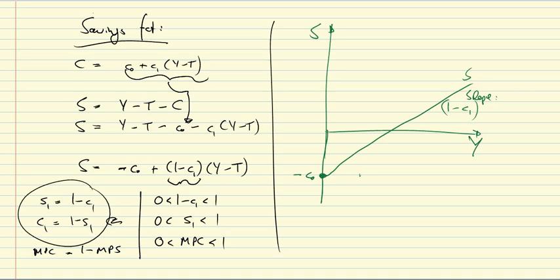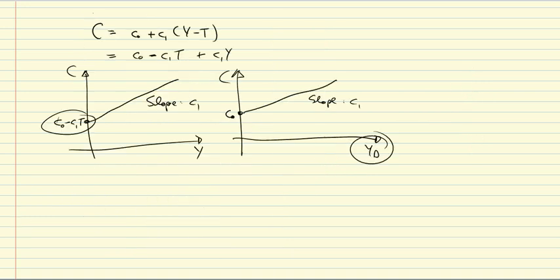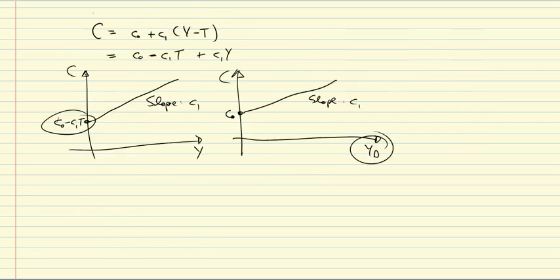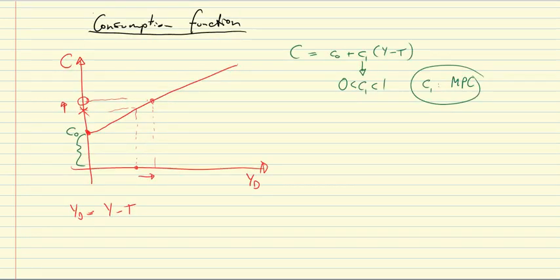I'll leave it at that as an introduction to the consumption function. The key is that we have a positive but less than 1 marginal propensity to consume, and that we can express that in this graph where we have autonomous expenditures on this axis as the intercept, and then the consumption rising with additional dollars of income according to C1.